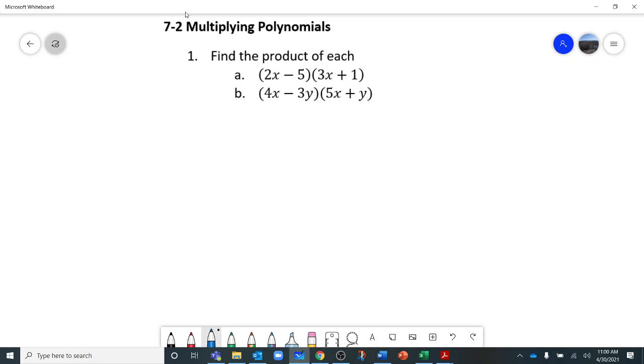Number one, part A. We're going to do (2x - 5)(3x + 1), and we want to make sure that we multiply everything in the left parenthesis by everything in the right parenthesis. I'm going to mark my 2x with red and everything I'm going to multiply by with red.